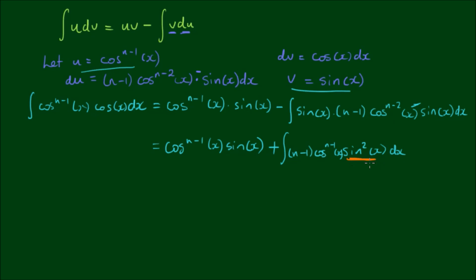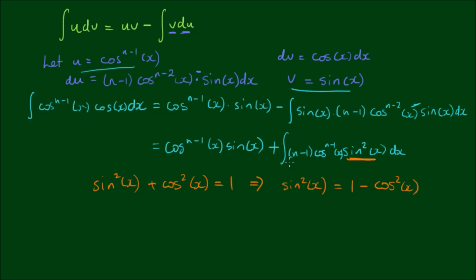We have this sine squared x term, which unless written in terms of cosine is not very useful. Using the Pythagorean identity, sine squared x plus cosine squared x equals 1, we can rearrange to get sine squared x equals 1 minus cosine squared x. Thus the integrand on the right-hand side becomes n-1 times cosine to the n-2 power times (1 minus cosine squared x), and then we apply the integral.